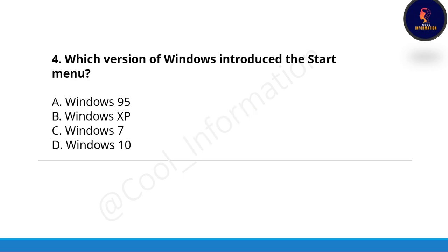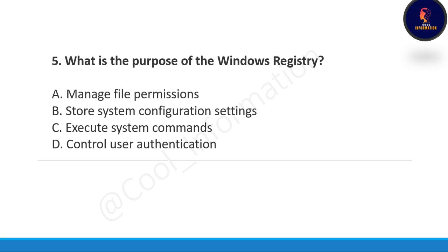Next question: Which version of Windows introduced the Start Menu? Options are: Windows 95, Windows XP, Windows 7, or Windows 10. The correct option is Option A, Windows 95.